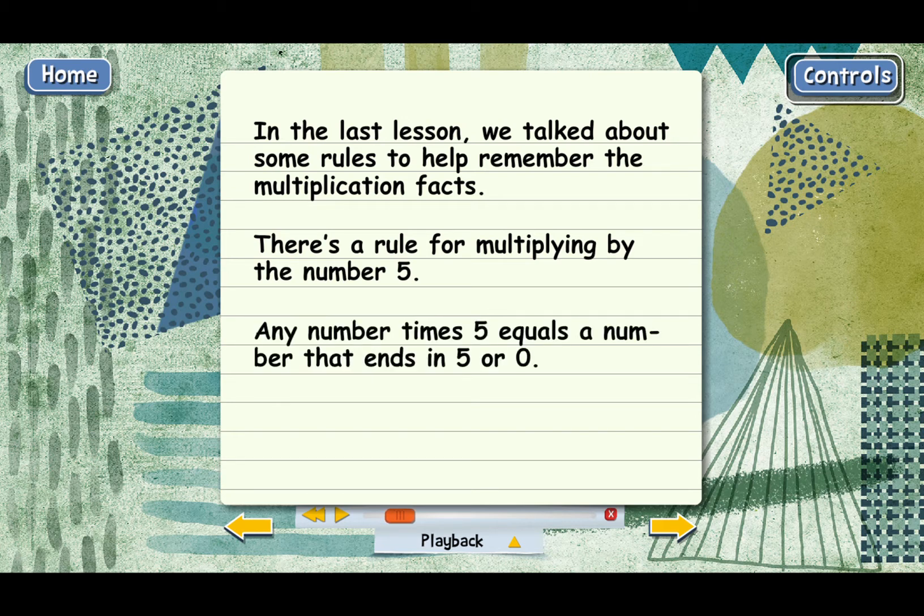Turns out that any number times 5 equals a number that ends in 5 or 0. So if you're trying to multiply 7 times 5, you know the answer can't be something like 32. That won't work. 32 ends in 2. The answer has to end with a 5 or a 0.